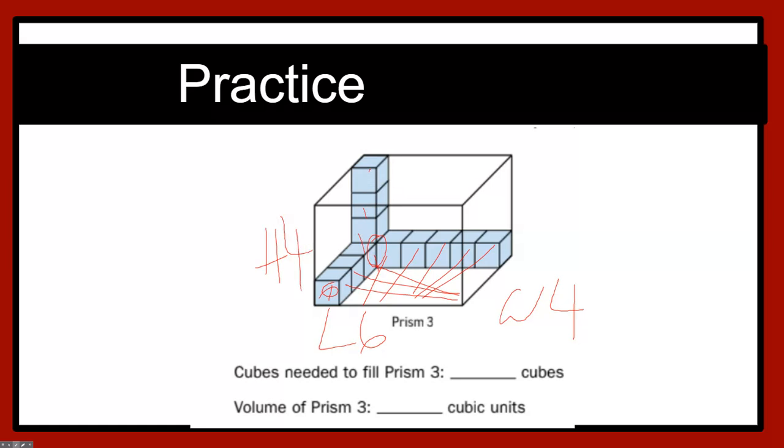Now if we multiply these, we get 96 cubes, or 96 cubic units, or units cubed.